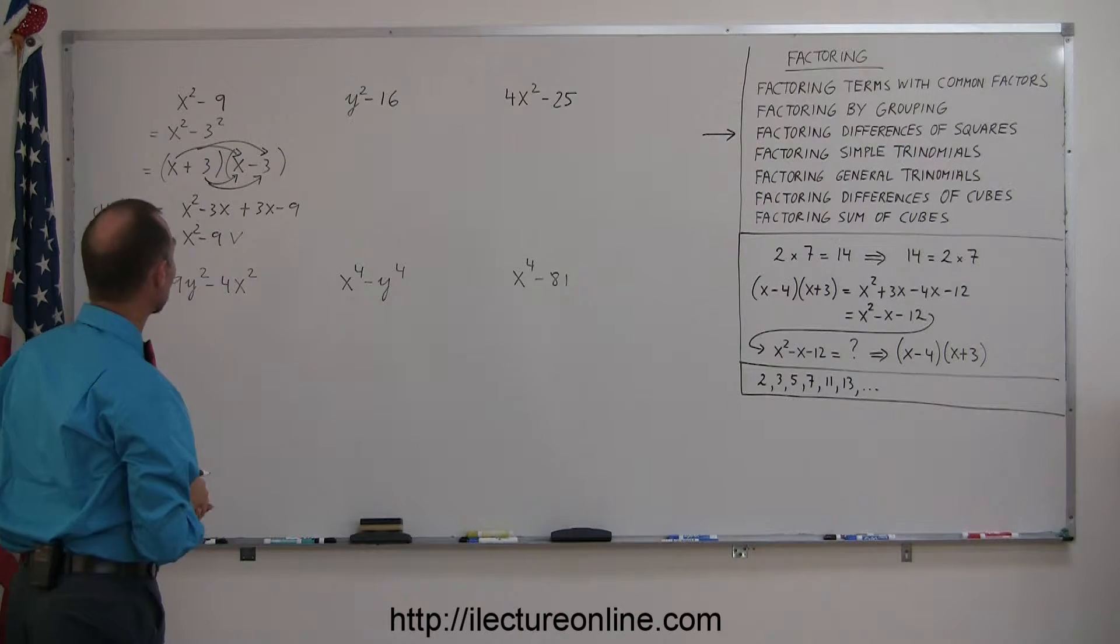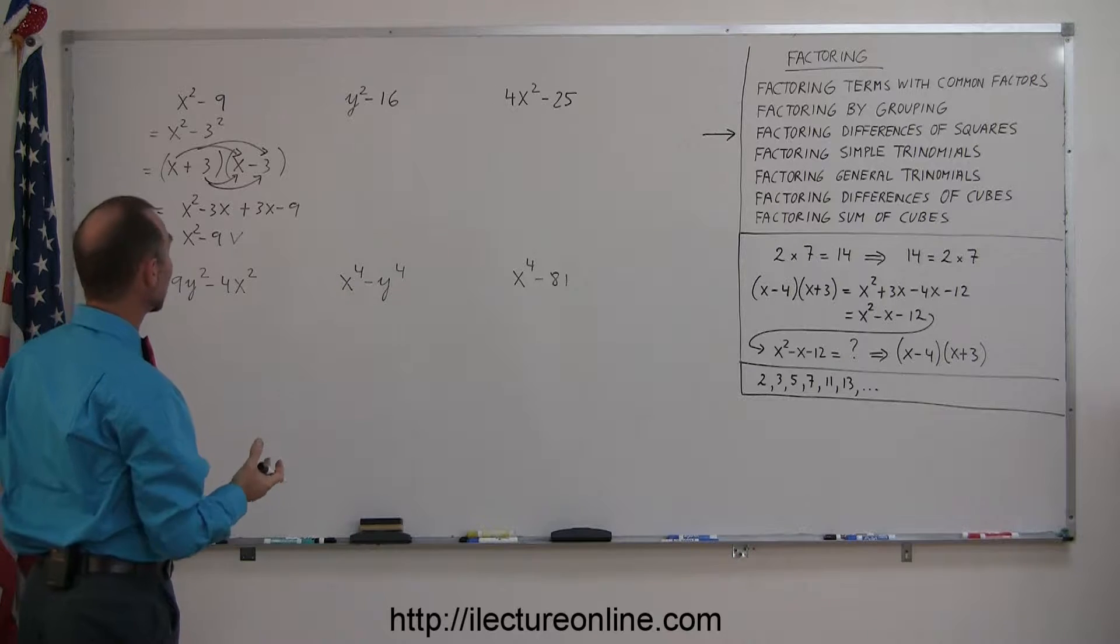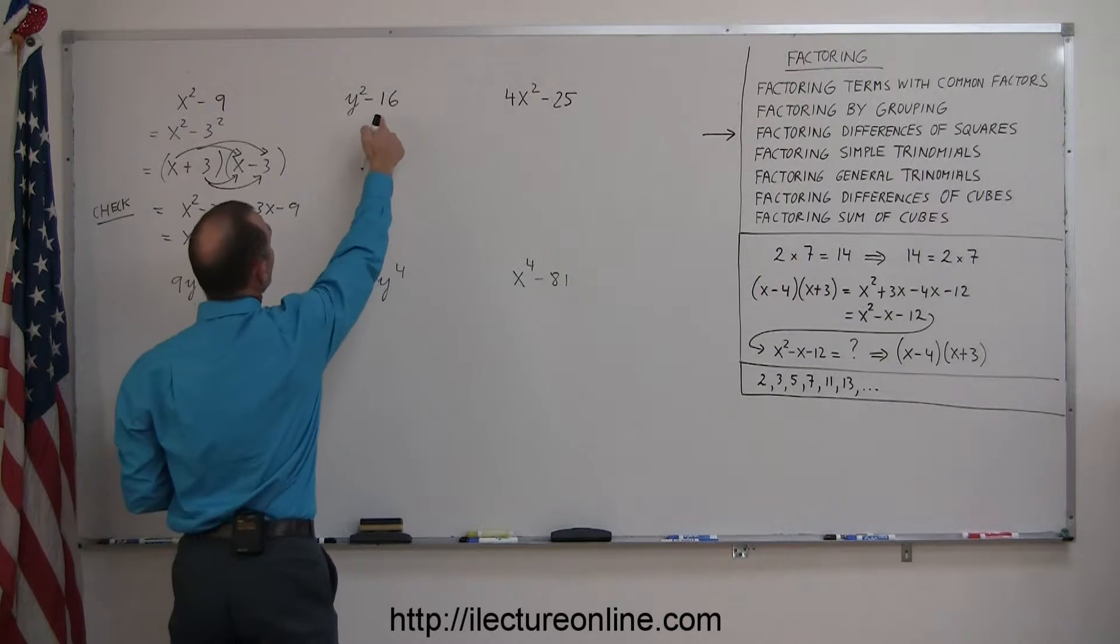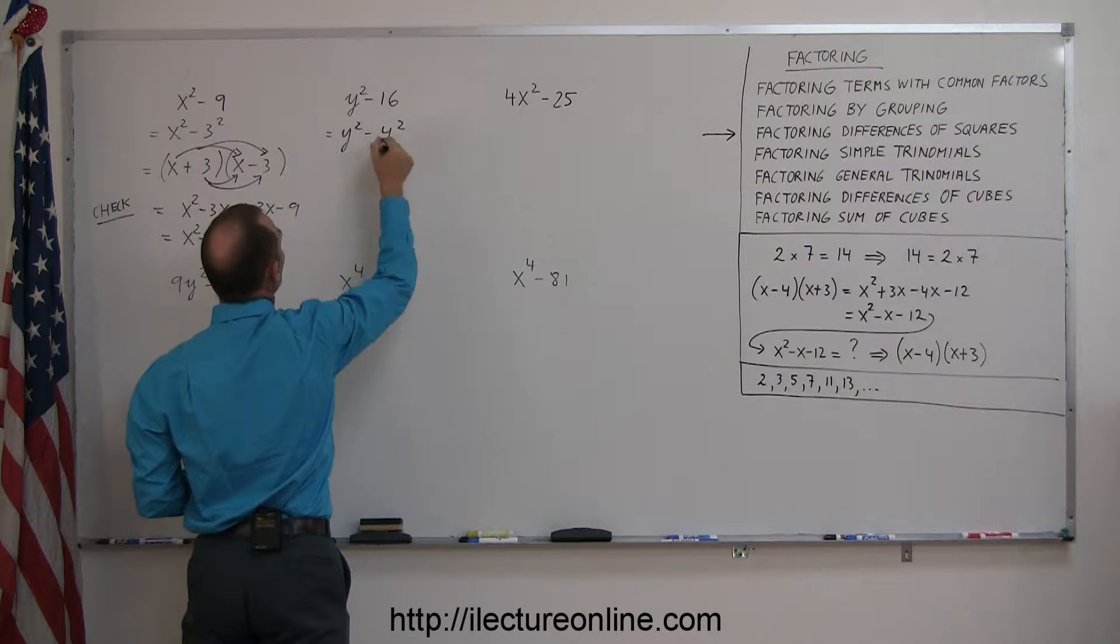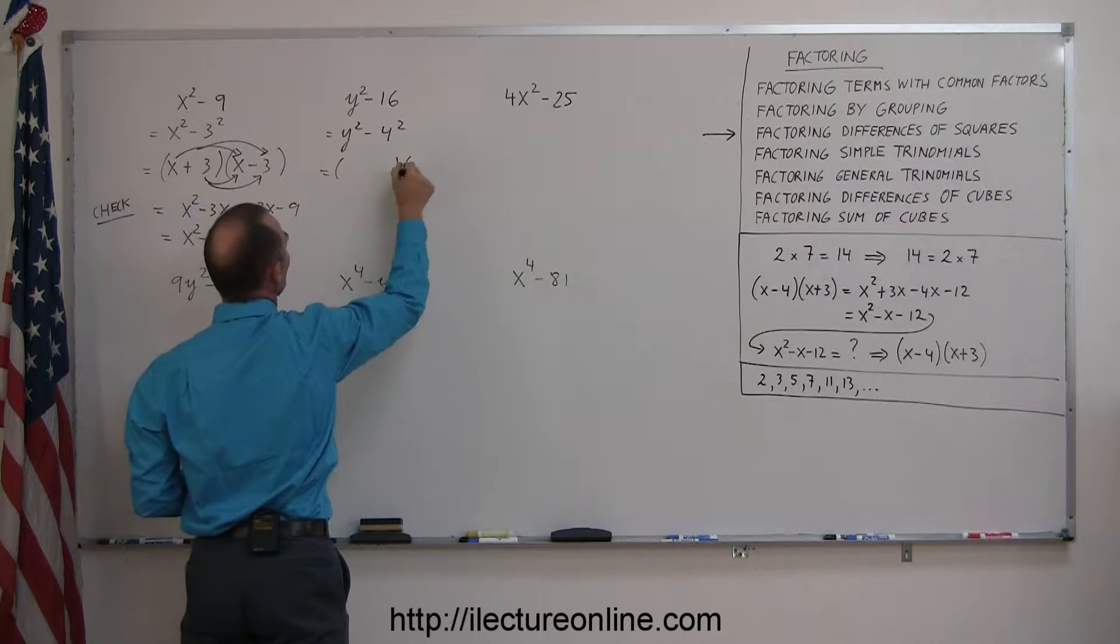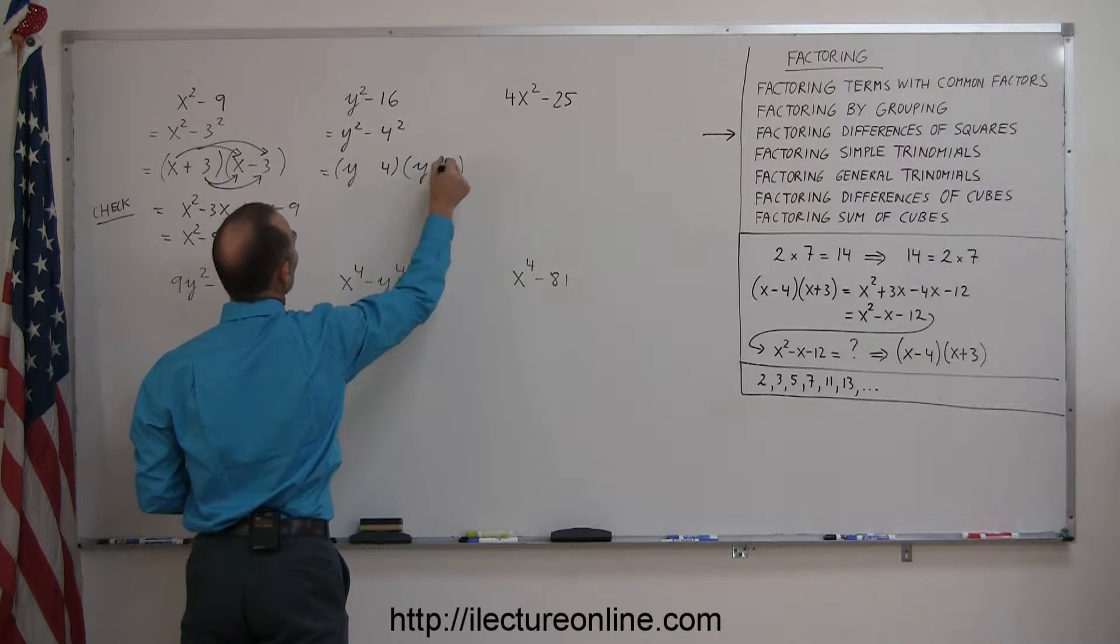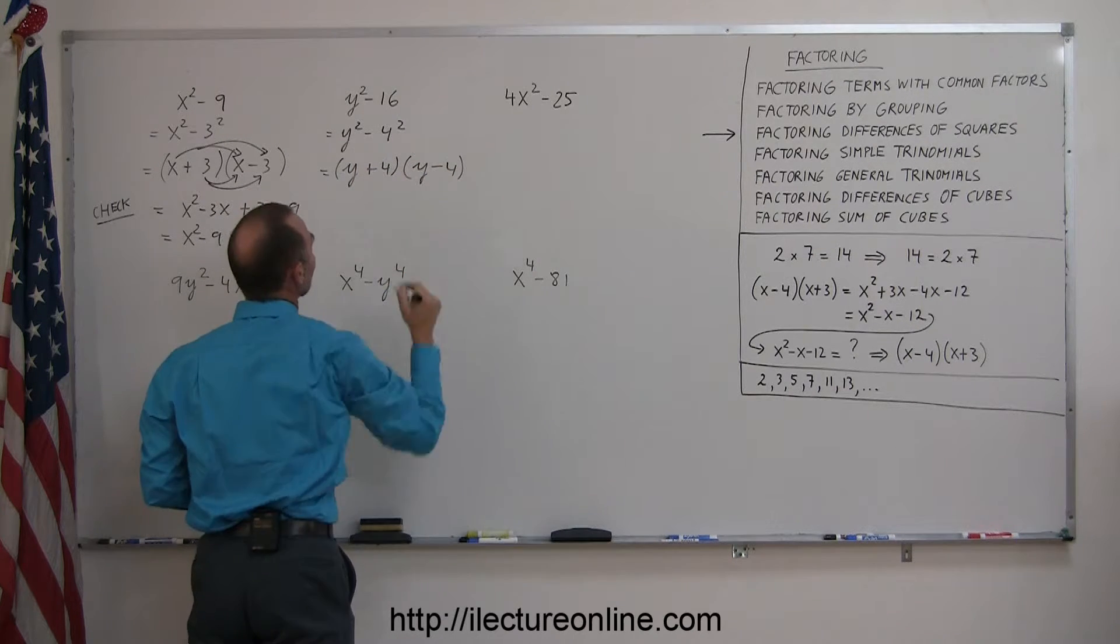So that's how we factor the difference of squares. So once you know that, it's really easy. Again, you can say this is equal to y² - 4². So therefore, when I factor it, it will look like this. Have a y and a y, a 4 and a 4, a plus and a minus, and I'm done. This is pretty simple.